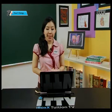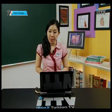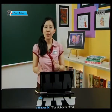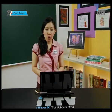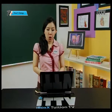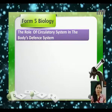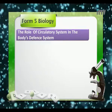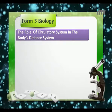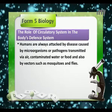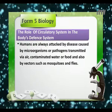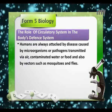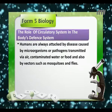Let us look at the role of the circulatory system in the body's defense system, because we have learned the circulatory system in fish, amphibians, and humans, and we have compared the different circulatory systems. We will continue with other roles of the circulatory system apart from transport. There are many microorganisms in our environment, some of them are pathogenic, and humans are always attacked by diseases caused by microorganisms or pathogens, which are transmitted via air, contaminated water or food, and also by vectors such as mosquitoes and flies.